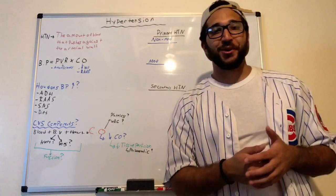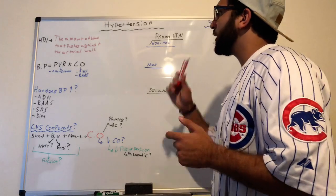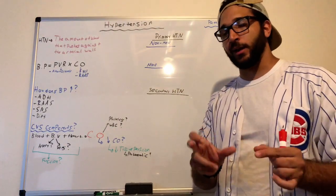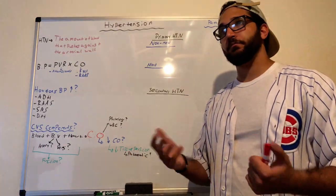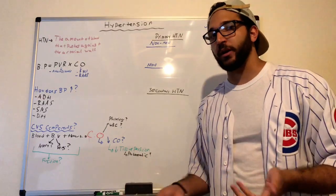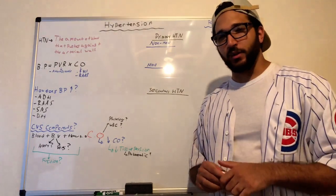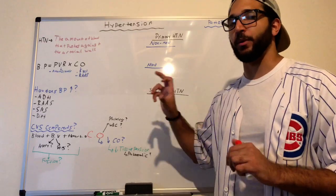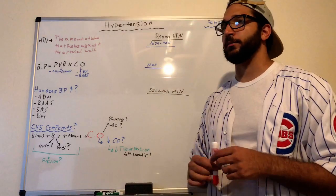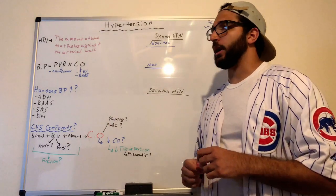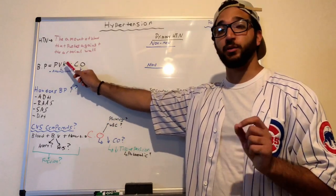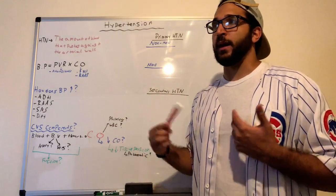Let's get started with the pathophysiology behind hypertension. Hypertension is defined as the amount of blood pushing against an arterial wall. It can be caused by underlying diseases such as unregulated diabetes, poor diet, or anything that increases blood pressure. It's important to understand the formula: blood pressure equals peripheral vascular resistance times cardiac output.